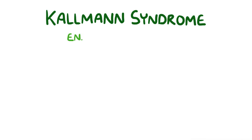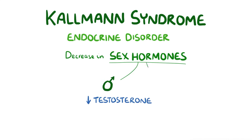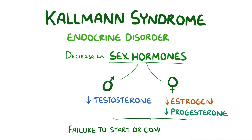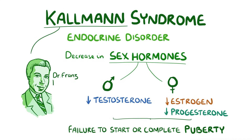Kallmann syndrome is an endocrine disorder caused by a decrease in sex hormones — either testosterone in males, or estrogen and progesterone in females. That decrease leads to a failure to start or complete puberty. The syndrome is named after Dr. Franz Kallmann, the geneticist who first described it.